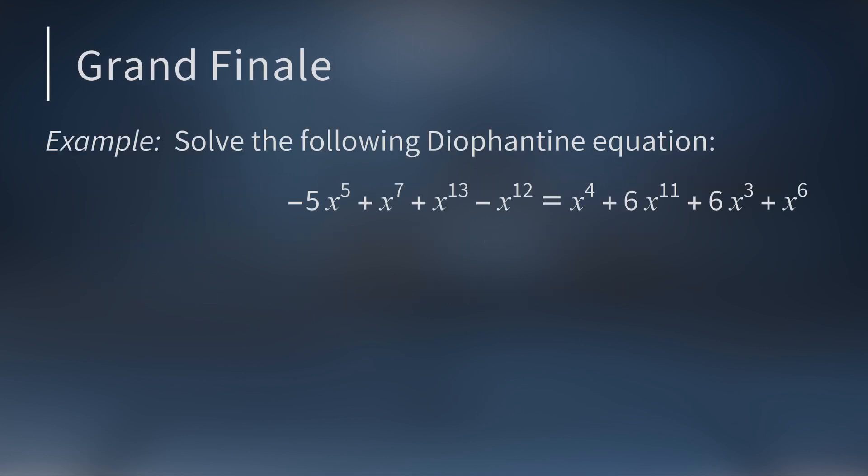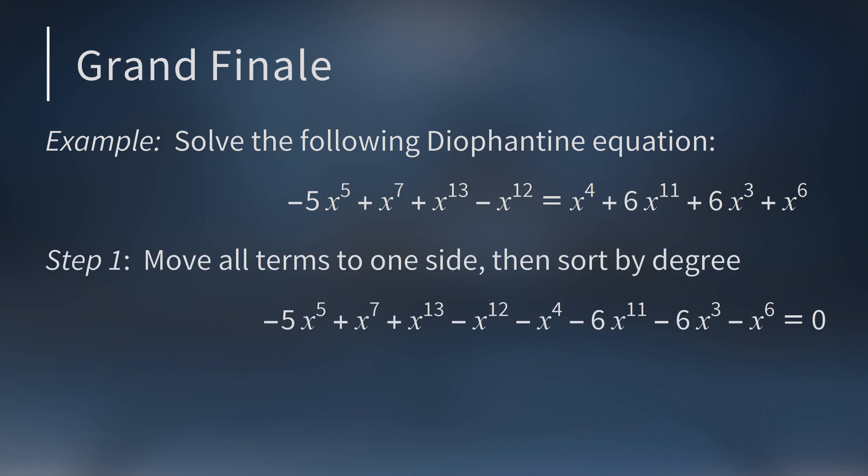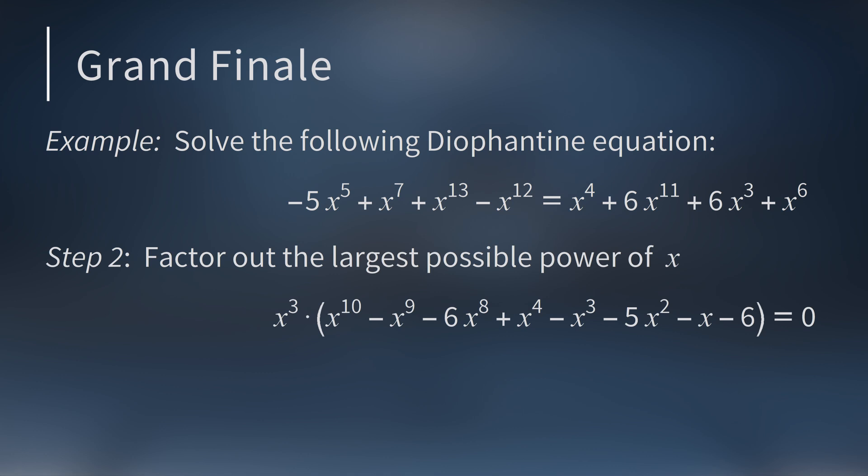As a final example, let's solve this Diophantine equation. First, move all the terms to one side. Then, sort this polynomial by degree so it's in standard form. Next, factor out the largest power of x possible. In this example, that's x cubed. So x equals zero is a solution to this Diophantine equation.